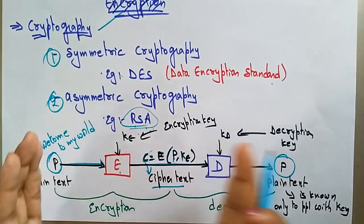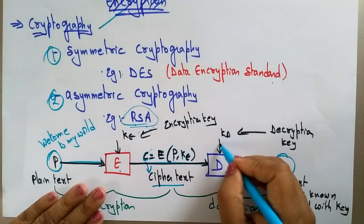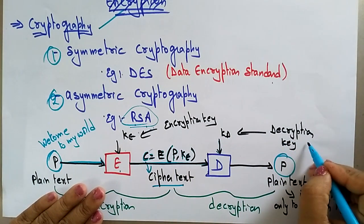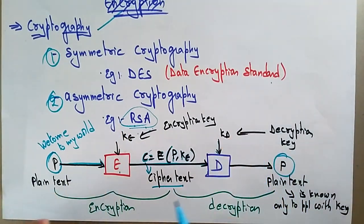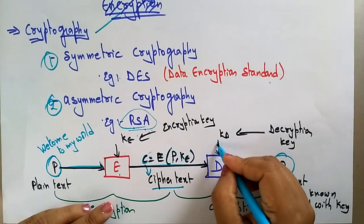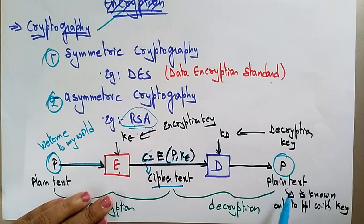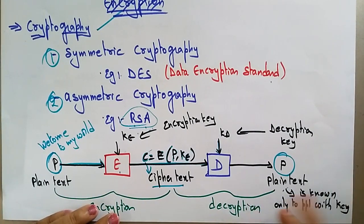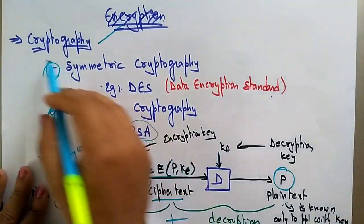On the receiving side, there is a decryption key Kd. Just as you need a key to lock and unlock a door, Kd is used to decrypt the cipher text. The plain text is accessible only to the person who has the decryption key. This part is called decryption, and the complete process of encryption plus decryption is called cryptography.